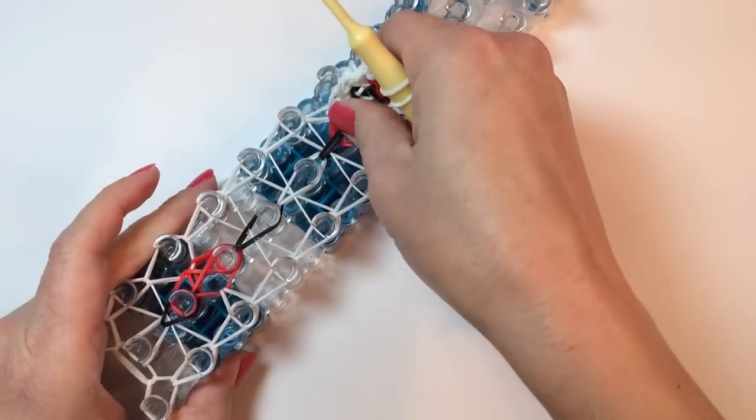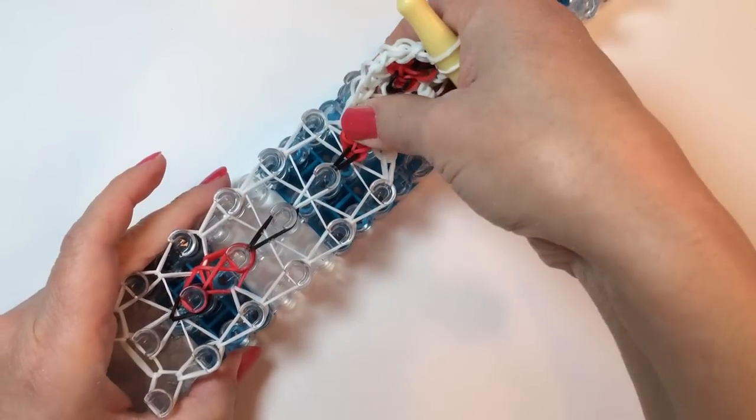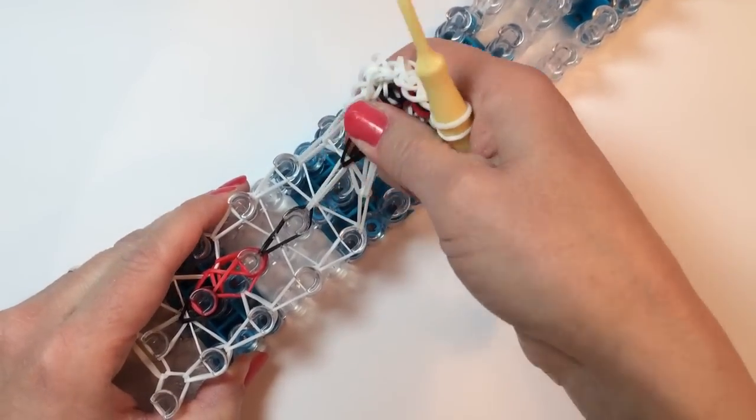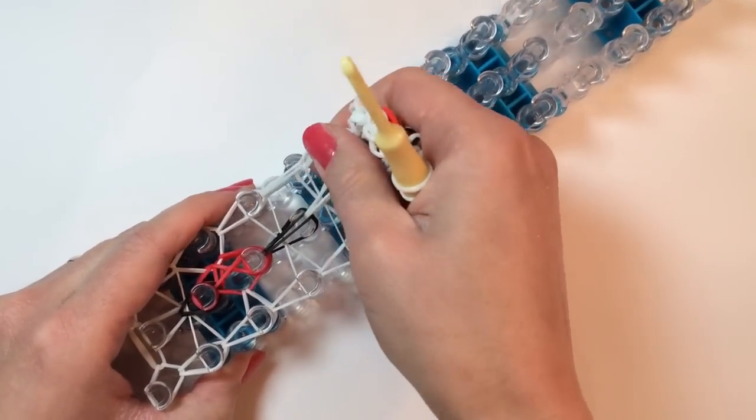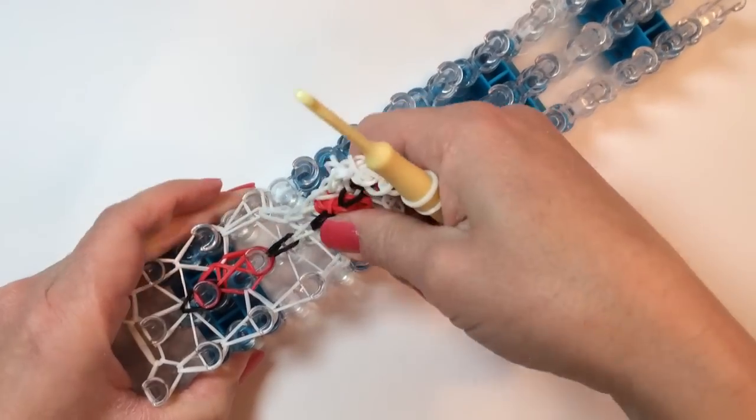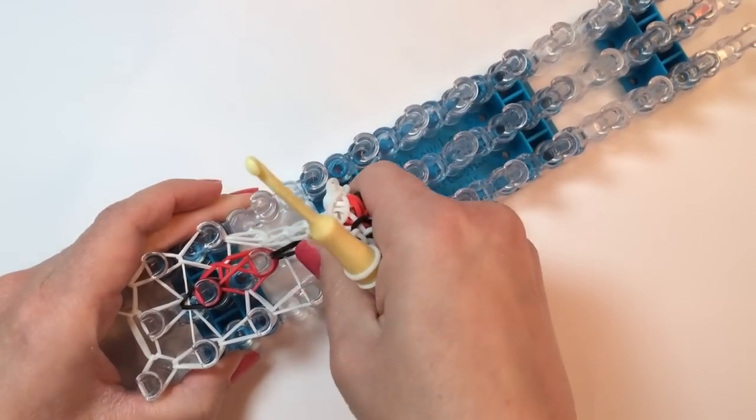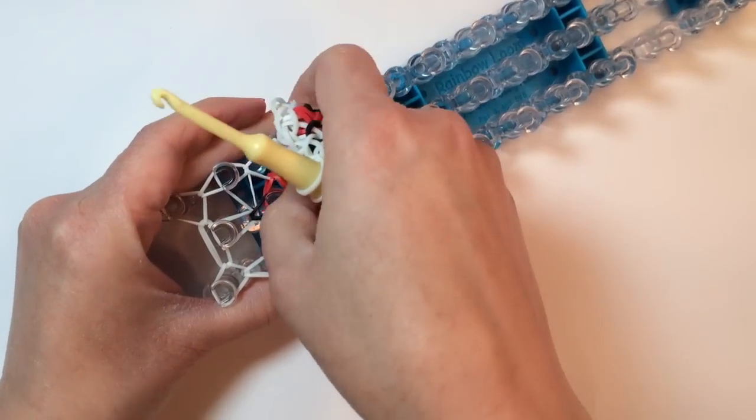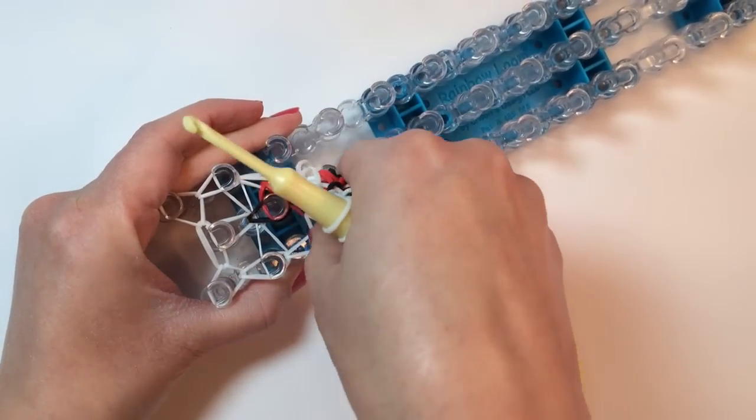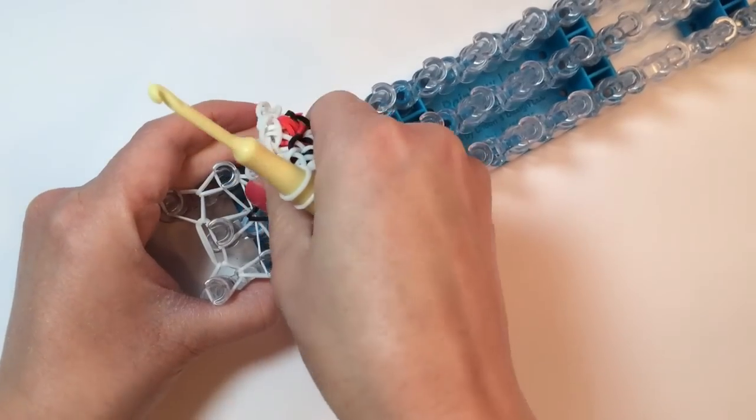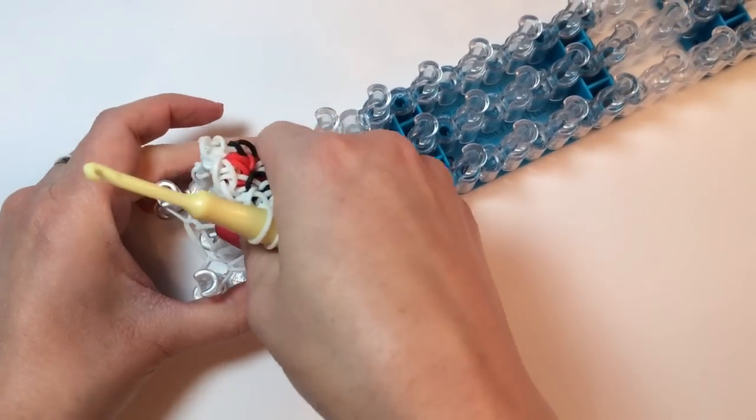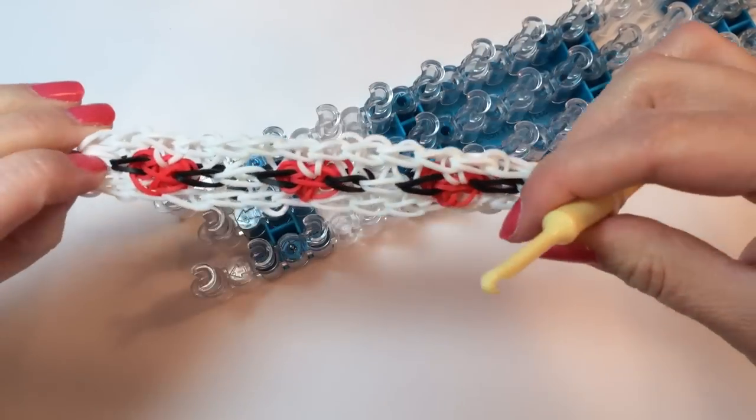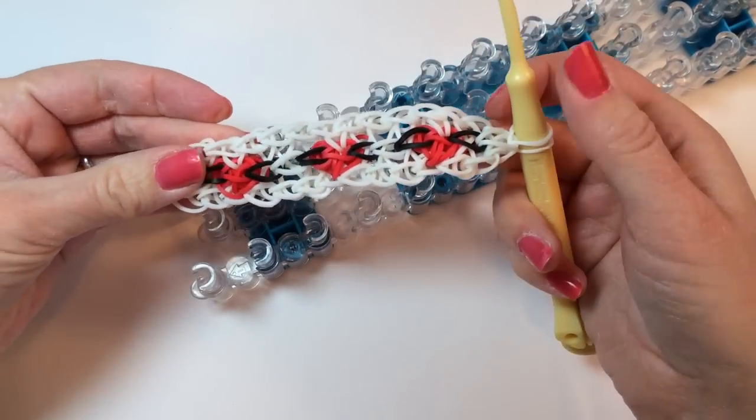Especially when you get on these spots with the hearts. You want to make sure you're pinching on both sides so that you don't break any of those rubber bands. The border ones come off pretty easy, but the hearts, there's a lot of rubber bands on a single peg. Upside down, there we go. So there's your three hearts.